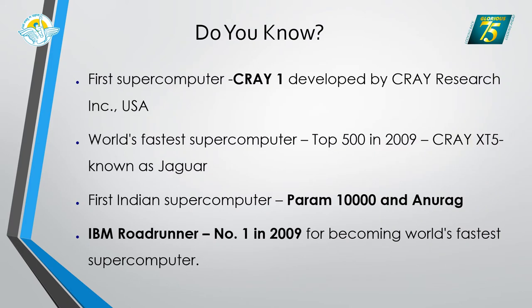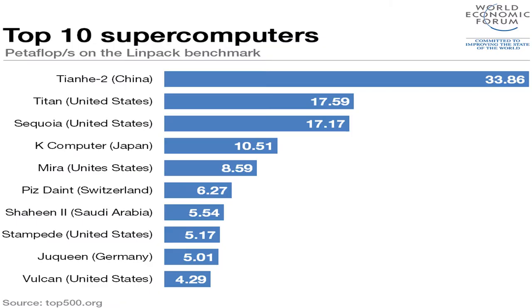The first supercomputer was developed in the USA, called Cray-1. India also has its own supercomputers — Param 10,000 and Anurag. The world's fastest supercomputer is the Cray XT5, known as Jaguar. This is a list of the top 10 supercomputers.